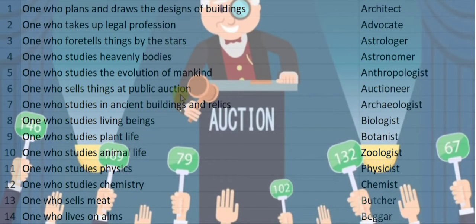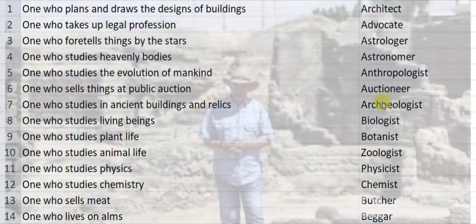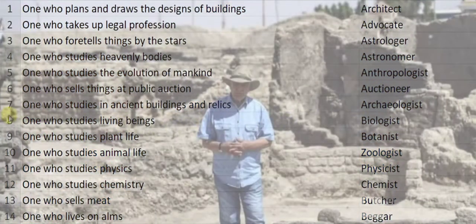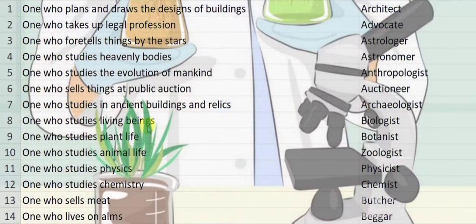Number six, one who sells things at public auction is called an auctioneer. One who studies ancient buildings and relics is an archaeologist. One who studies living beings is a biologist.